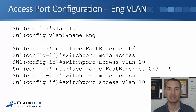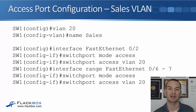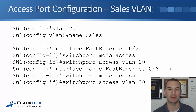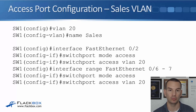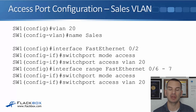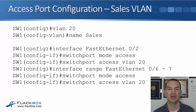That completes the engineering VLAN configuration. For the sales VLAN, use 'vlan 20', 'name SALES', then 'interface FastEthernet 0/2', 'switchport mode access', 'switchport access vlan 20'. Finally, 'interface range FastEthernet 0/6 - 7', 'switchport mode access', and 'switchport access vlan 20'.